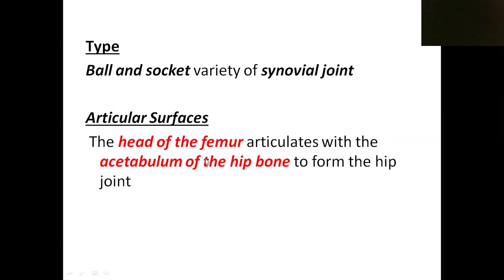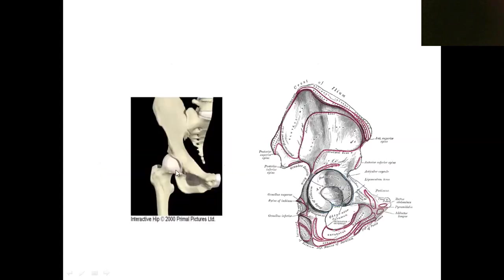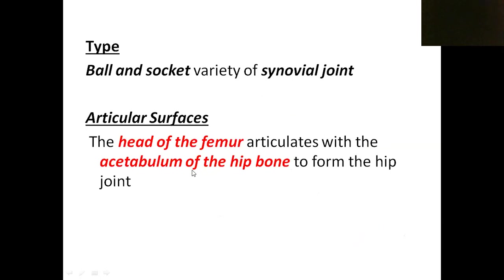The articular surfaces of the hip joint are: one surface is from the hip bone — the depression in the hip bone is known as the acetabulum — and the other is the head of the femur. So the head of the femur articulates with the acetabulum of the hip bone; those are the two articular surfaces.